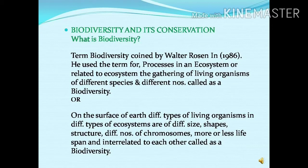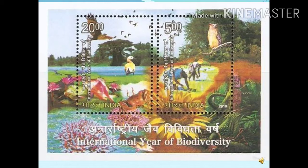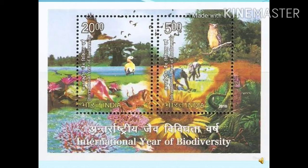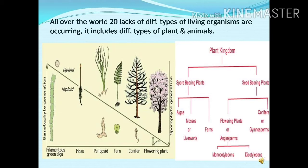This term biodiversity was first developed by Walter Rogan in 1986. For representing biodiversity, India made an effort and on the occasion of the International Year of Biodiversity in 2010, India published postal stamps of different values. Those postal stamps highlighted pictures of different animals and different kinds of biodiversity of India.